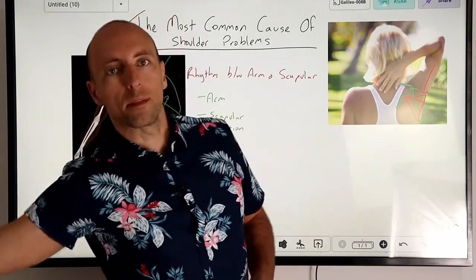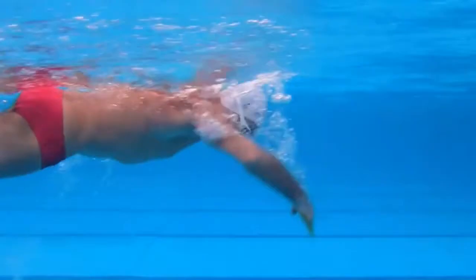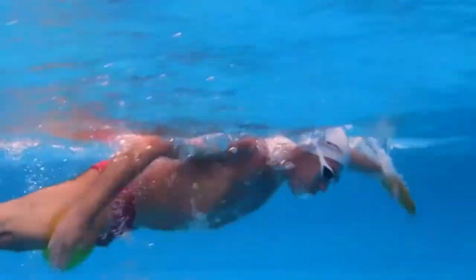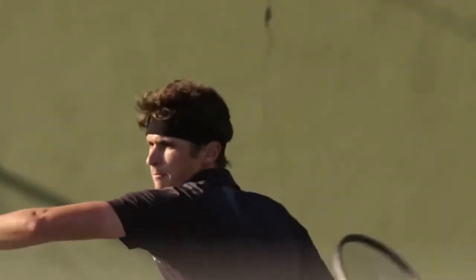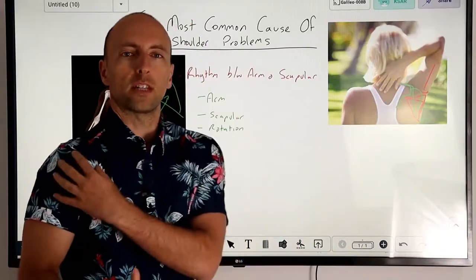Swimmers when they're coming out to the front of their stroke, tennis players as they hit their forehand through, these are all key times that we really notice when people have scapular instability problems.